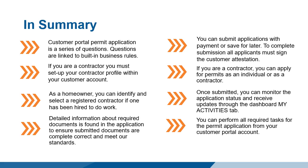The Customer Portal application is structured as a series of questions. Each question informs business rules. If you are registered as a contractor, you can apply as an individual or as a contractor. You can also signal if there are other contractors who will be working under the permit. As a homeowner, you can identify and select a registered contractor if one has been hired to do the work. You have the option of saving the application and returning at a later date or submitting the application with online credit card payment. Detailed information about the required documents is found in the application to ensure submitted documents are complete, correct, and meet our standards. The dashboard allows you to monitor the application as it progresses through the process. All required tasks can be completed from your Customer Portal account.